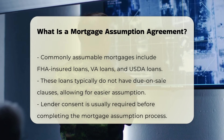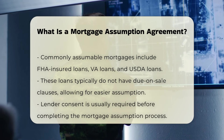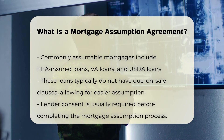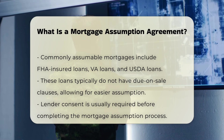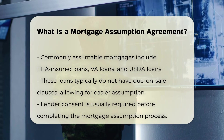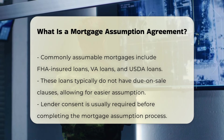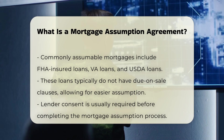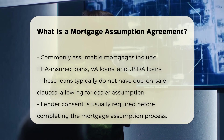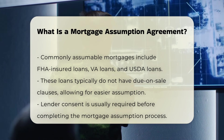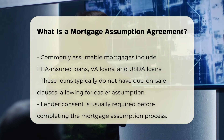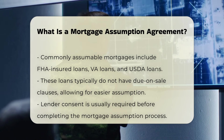Types of Assumable Mortgages: Certain types of mortgages are more commonly assumable, such as FHA-insured loans, VA loans, and USDA loans. These mortgages lack due-on-sale clauses, which allow for assumption without the lender's immediate demand for full loan payment.